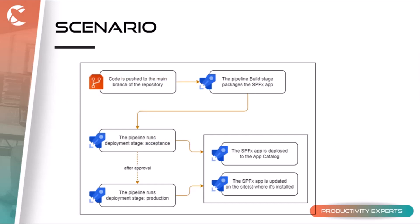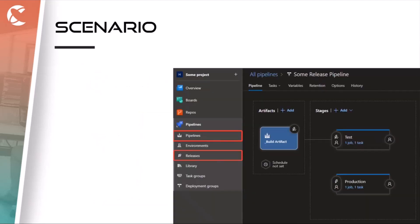Here's what I've been doing: when code is pushed to the main branch of the repository, a pipeline starts and builds the SPFx app. The pipeline then runs a deployment stage and publishes the package to the app catalog of SharePoint. It will update the app on a site where it's already been installed, then pause and wait for you to approve the deployment before running to production and doing the same there.